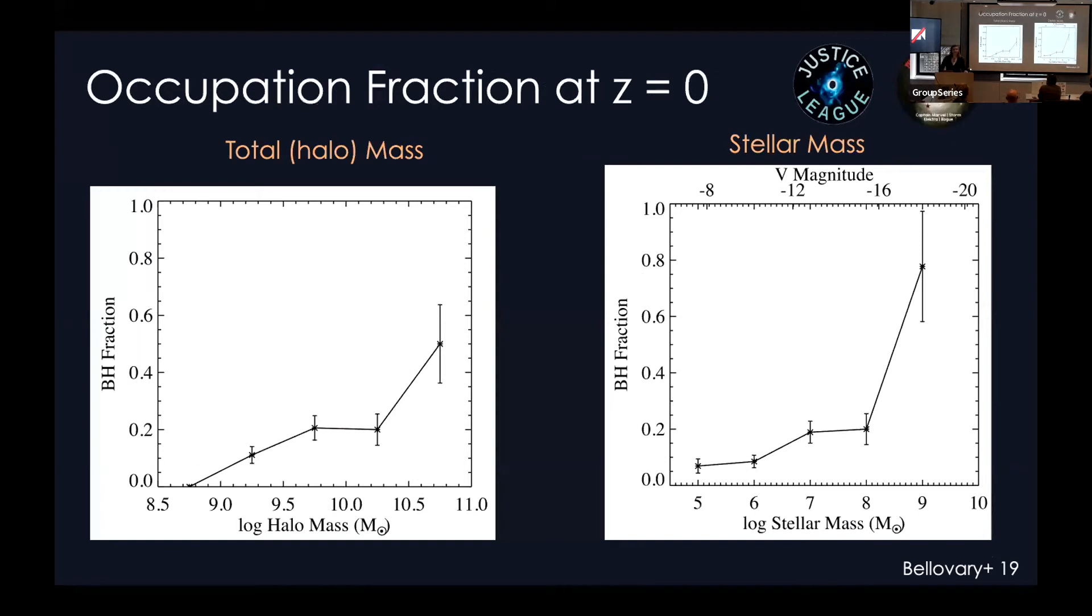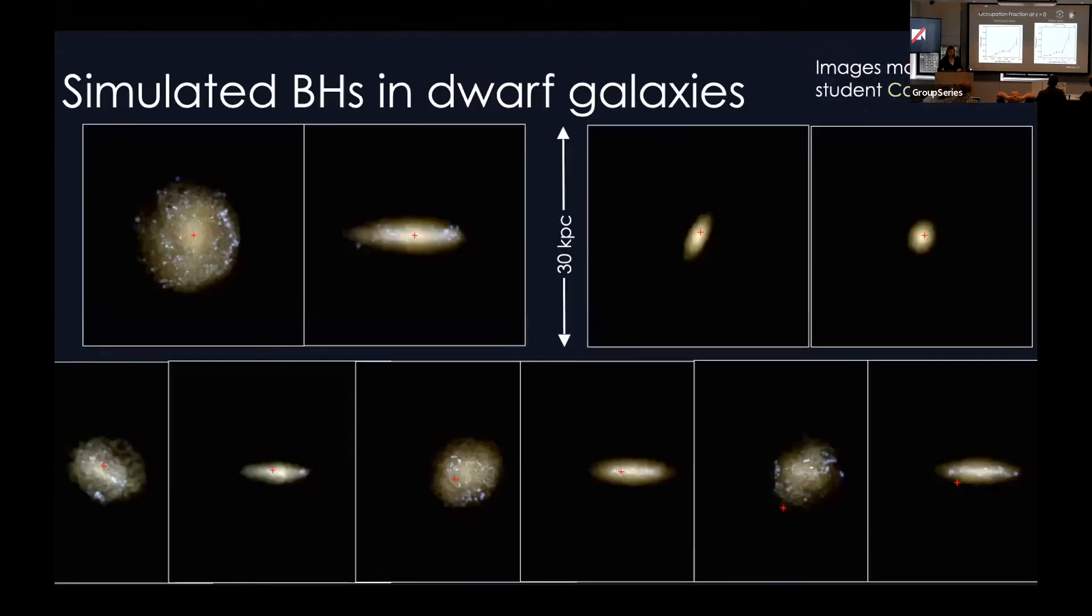All right. So this is the redshift zero occupation fraction. I've got it in terms of halo mass and in terms of stellar mass and even magnitudes, if you're into that. And so the general trend you can see is that the more massive a dwarf galaxy is, the more likely it is to host a massive black hole. And the ones that are very small have a pretty small chance of hosting one. And this is consistent with the few observational constraints that there are, as well as a lot of other theoretical predictions as well. So here are a couple of pictures of our simulated dwarf galaxies that host black holes.